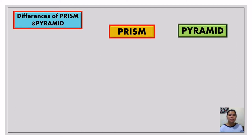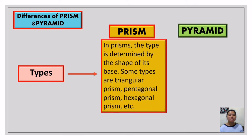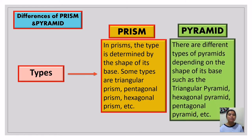Let's move on to the types of prisms and pyramids. In prisms, the type is determined by the shape of its base. Some types are triangular prism, pentagonal prism, hexagonal prism, etc. For pyramids, there are also different types depending on the shape of the base — such as triangular pyramid, hexagonal pyramid, pentagonal pyramid, and so on.